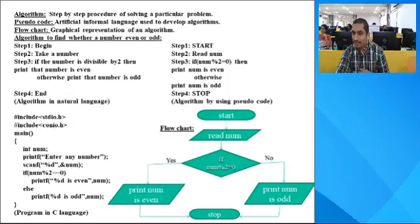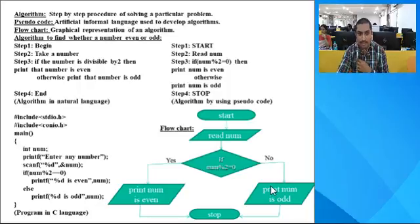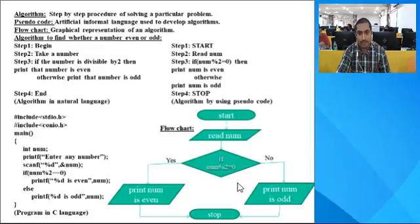This is an example I have constructed — a flowchart designed to find whether a given number is prime or not.